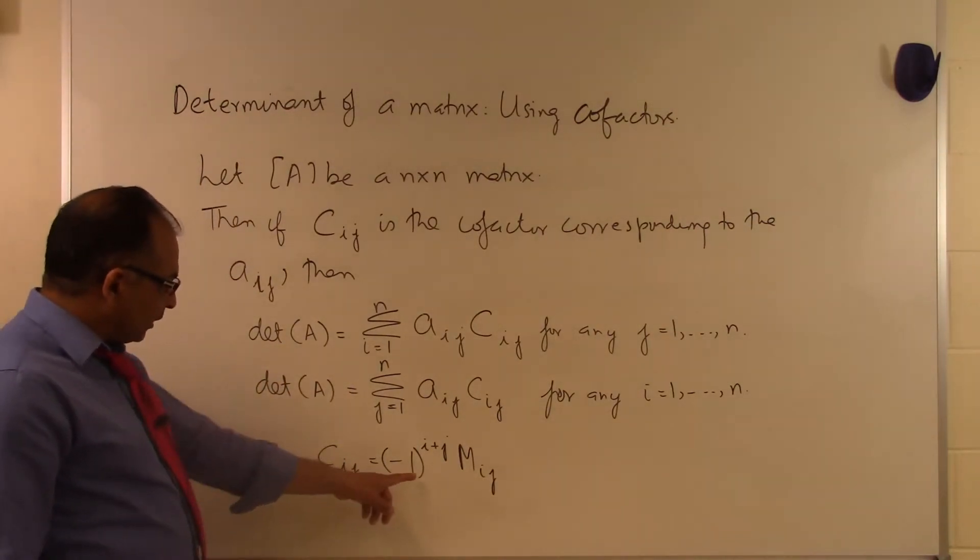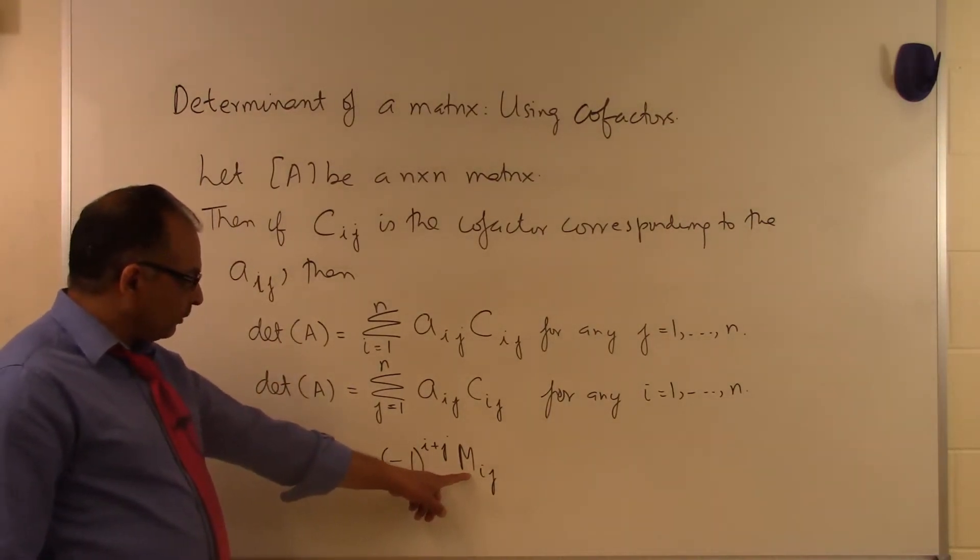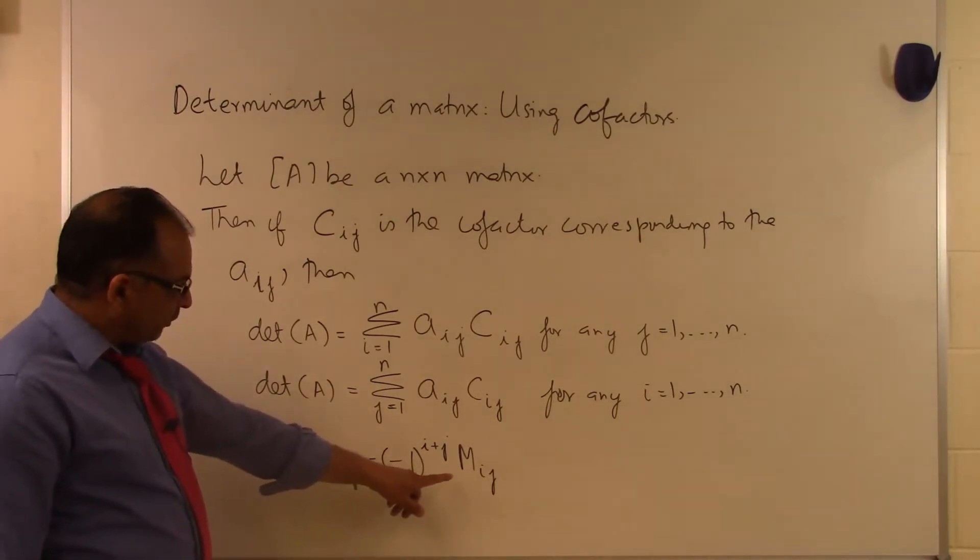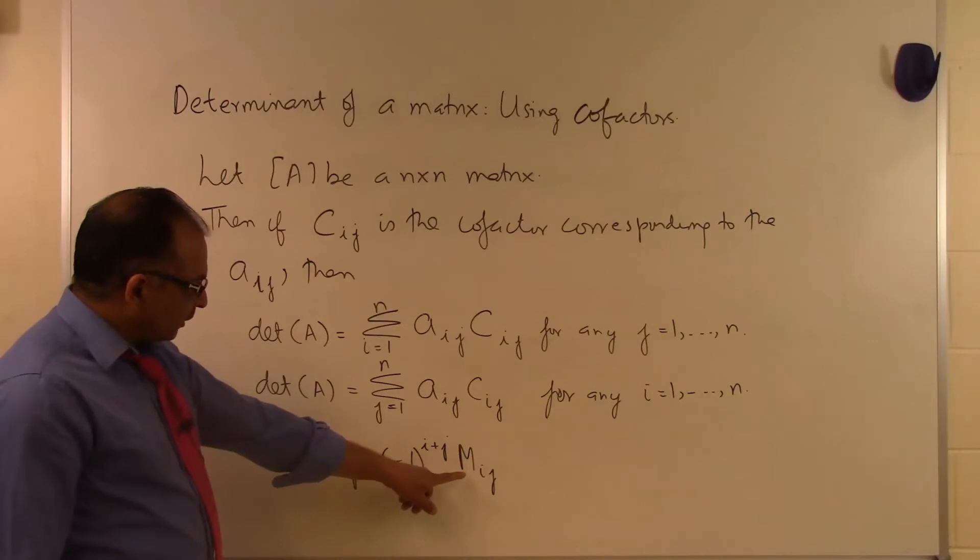In another segment we have talked about what we mean by the minor of a square matrix. You should be able to take that segment and look at what we mean by the minor of a matrix corresponding to the Aijth element.